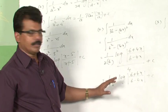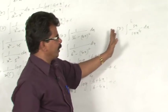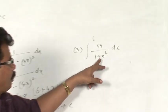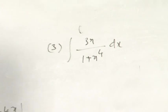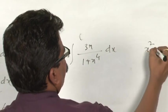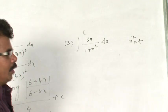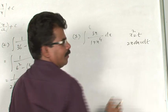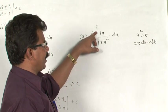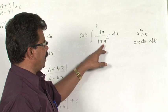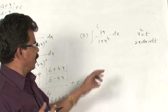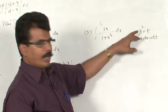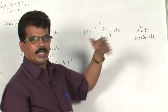One more important question: integral of 3x/(1+x⁴) dx, where higher powers are present. We use substitution: let x² = t, then 2x dx = dt. Note: if you had x⁶ in the denominator and x² in the numerator, you would take x³ = t. Here we have x⁴ in the denominator, so we take x² = t.